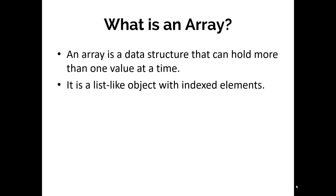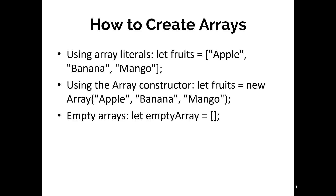So what is an array? An array is a data structure that can hold more than one value at a time, and it is a list-like object with indexed elements. Now, there are three basic ways by which you can create an array in JavaScript: using array literals, using an array constructor, or an empty array.